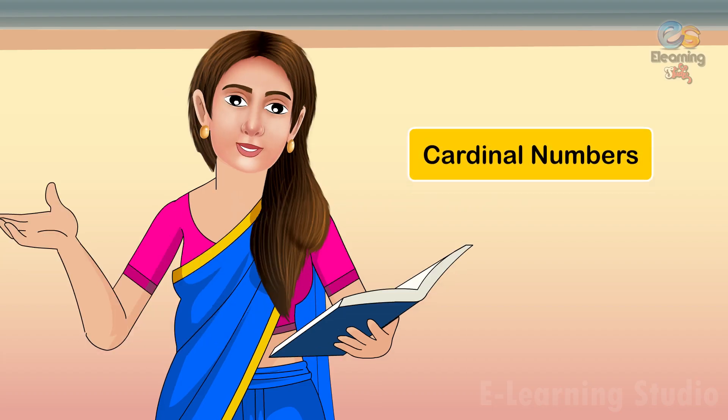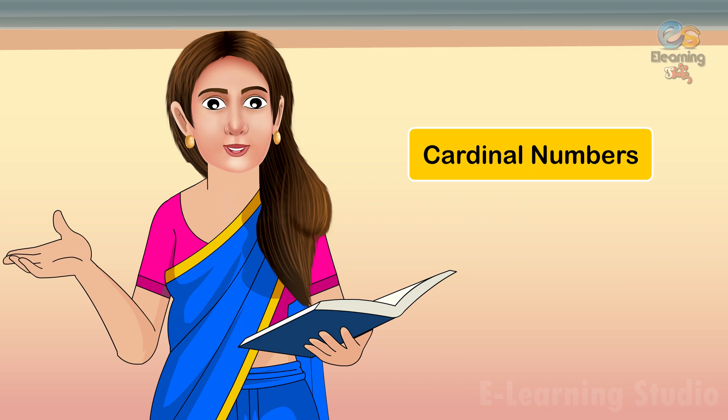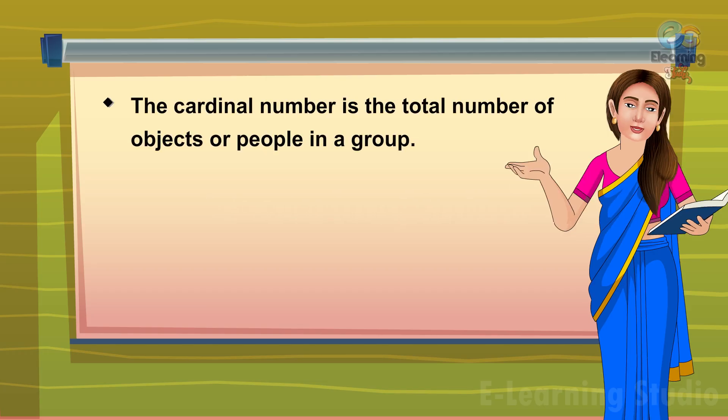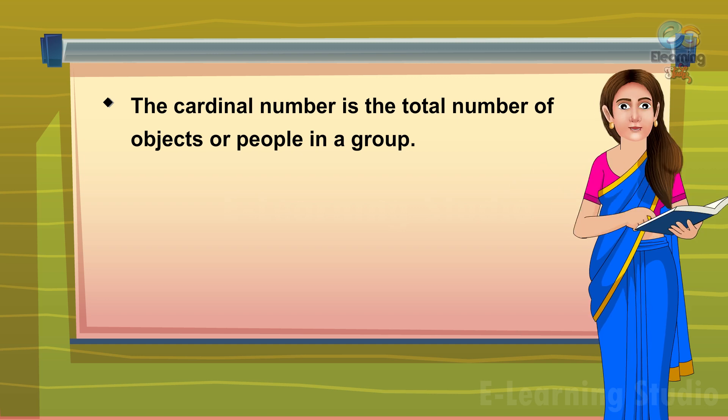We use the Cardinal Numbers to count the things and total quantity. Or we can say the Cardinal Numbers is the total number of objects or people in a group.